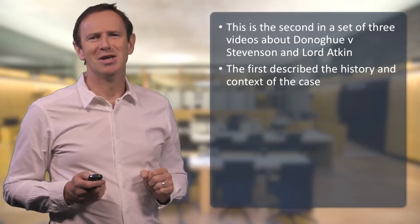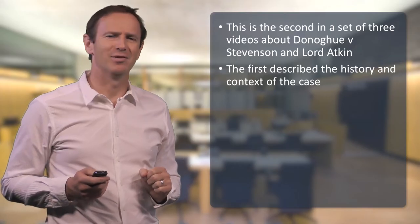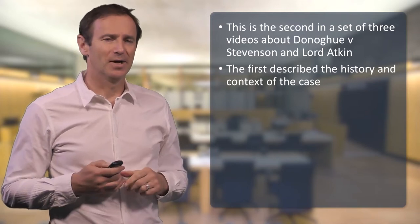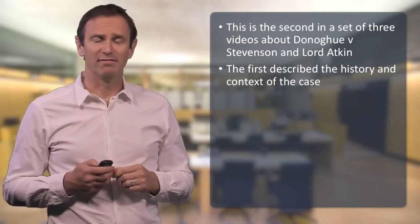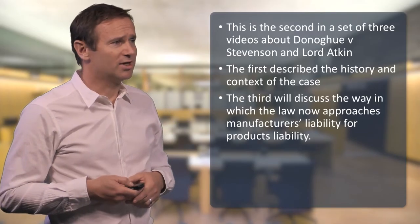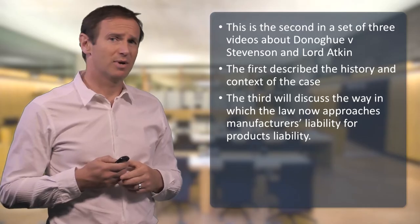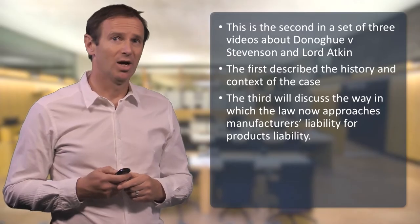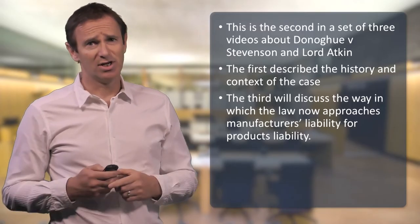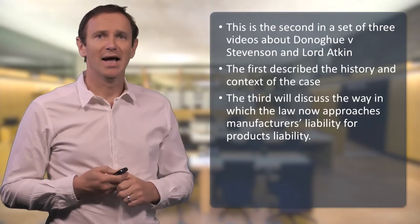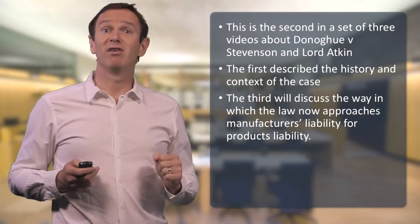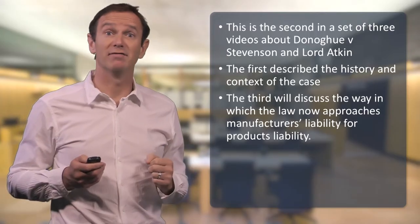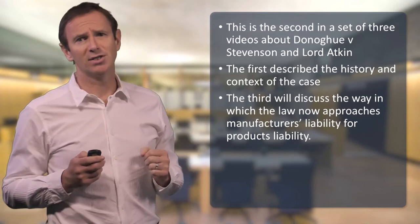That fateful day in 1928 when Mrs Donoghue was sitting in a cafe in Paisley in Glasgow, having her — or allegedly having her — ice cream float with ginger beer manufactured by the defendant. The third video clip is going to tell you a bit about an updated version of how the law regards products liability in the modern day. Products liability has moved on from the day of Donoghue and Stevenson, and particularly in the 1950s and 1960s this became a very live issue on account of some cases known as the thalidomide cases, involving drugs produced by drug manufacturers that caused horrendous abnormalities in children.